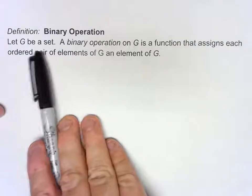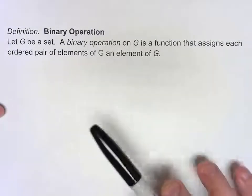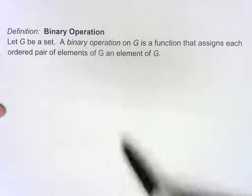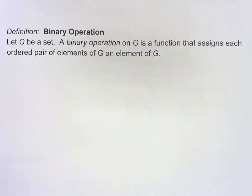We have a set and that set can be almost anything. A binary operation basically takes in two elements of that set and spits out another element of that set.